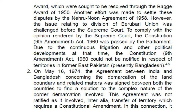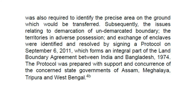On 16th May 1974, the agreement between India and Bangladesh concerning the demarcation of the land boundary and related matters was signed between both countries to find a solution to the complex nature of the border demarcation involved. This agreement was not ratified as it involved, inter alia, transfer of territory which requires a constitutional amendment. Subsequently, the issues relating to demarcation of undemarcated boundary, territories in adverse possession, and exchange of enclaves were resolved by signing a protocol on 6th September 2011, which forms an integral part of the Land Boundary Agreement between India and Bangladesh, 1974. The protocol was prepared with the support and concurrence of the concerned state governments of Assam, Meghalaya, Tripura and West Bengal.